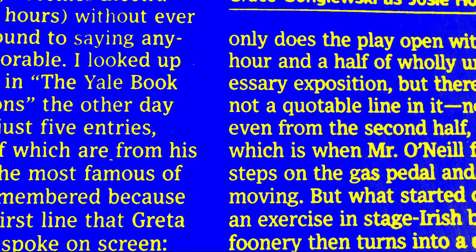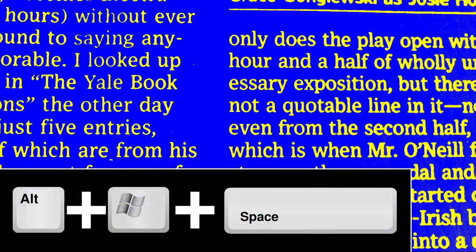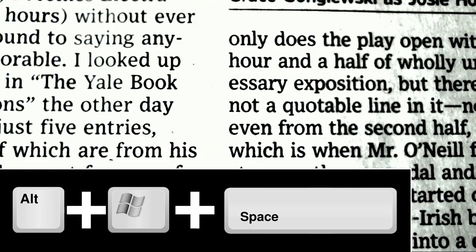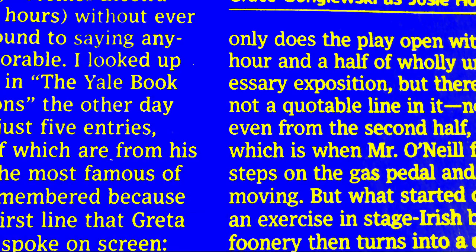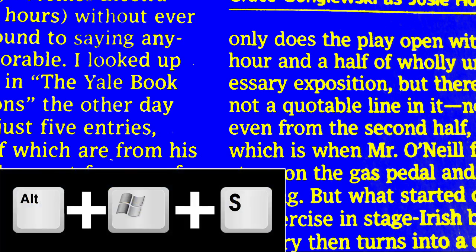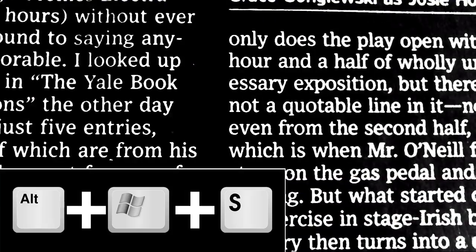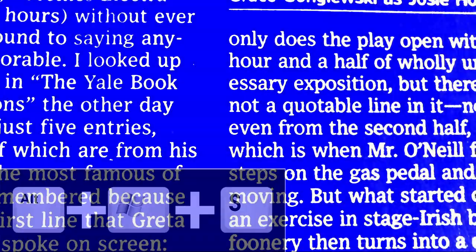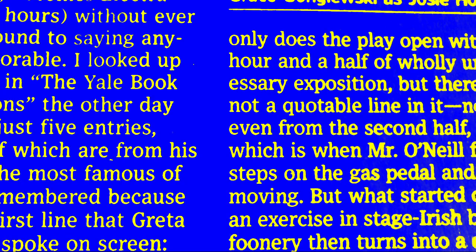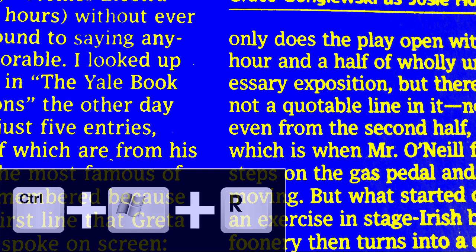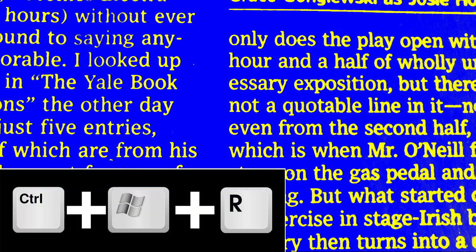Turning the Color Filter on and off is accomplished by pressing ALT WIN SPACEBAR. And if you want to cycle through all the color schemes, press ALT WINDOWS KEY S. If your image is upside down, just press Control Win R to rotate the camera image.